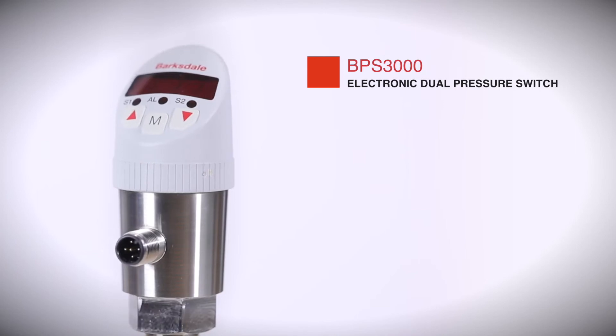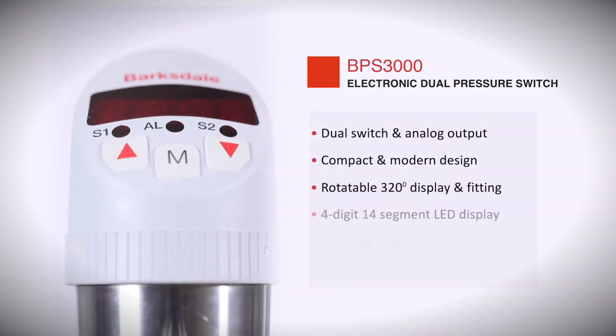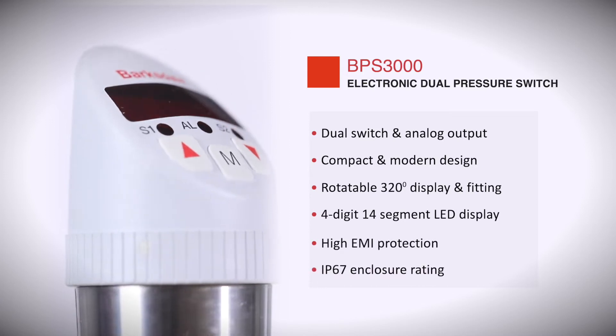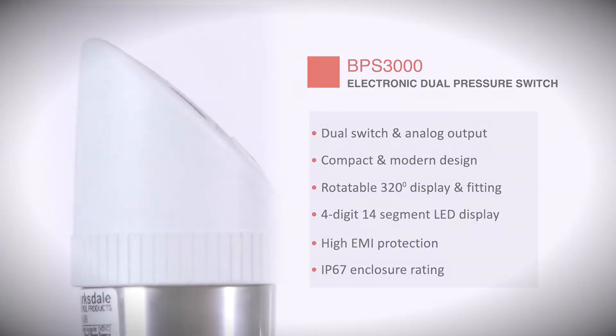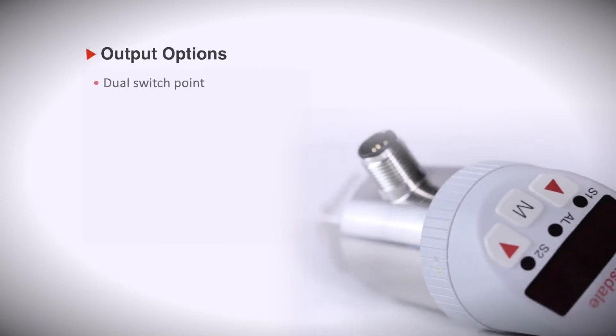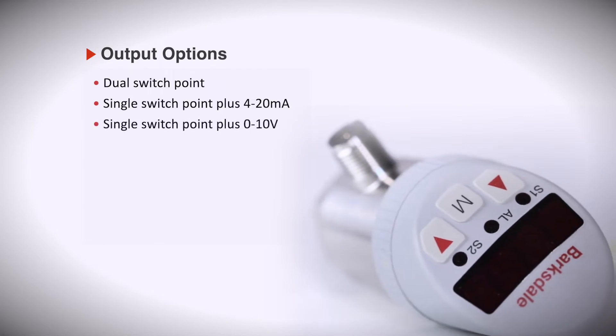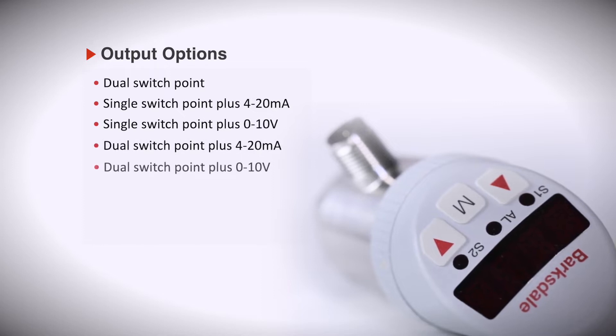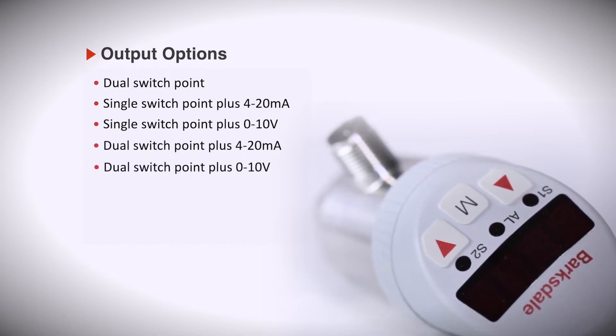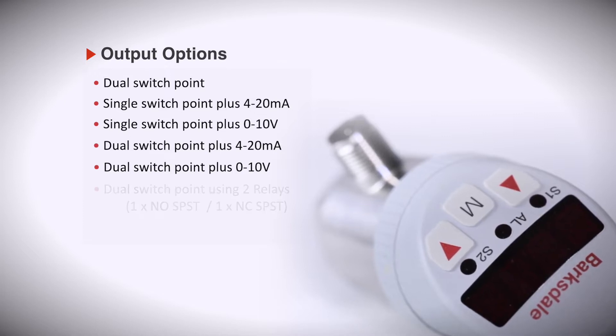The model BPS 3000 electronic dual pressure switch comes with the functionality of a switch, transducer, and display in just one instrument. The BPS 3000 offers various output options: single or dual switching output along with optional 0 to 10 volt DC or 4 to 20 milliampere analog output signal, enabling precise continuous measurement and sensing.